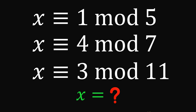Today, we will answer a math challenge given by one of our followers. The question goes like this: find the value of x in this congruence — x is congruent to 1 mod 5, x is congruent to 4 mod 7, and x is congruent to 3 mod 11.